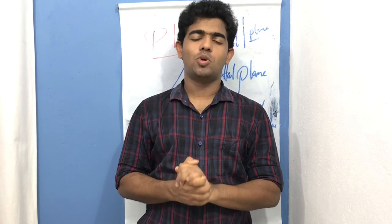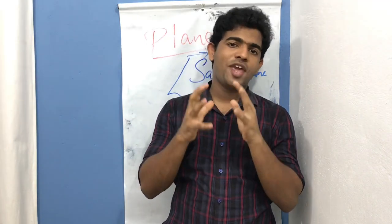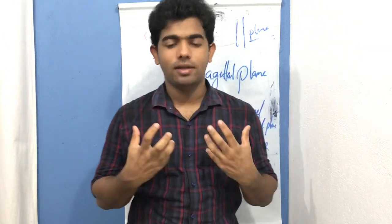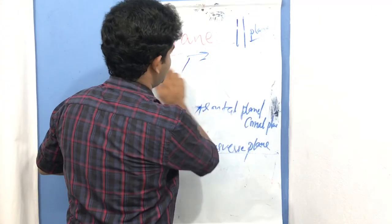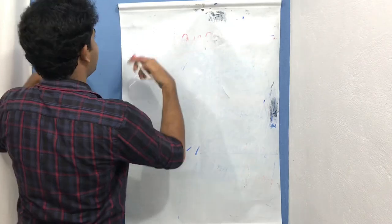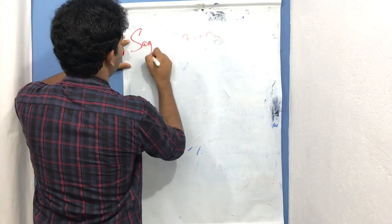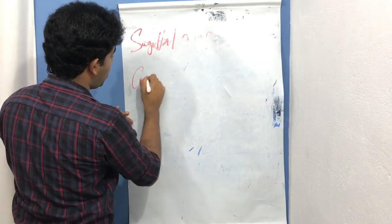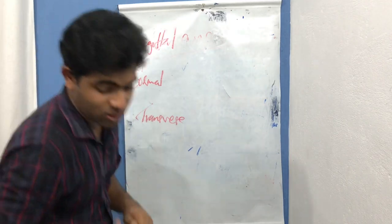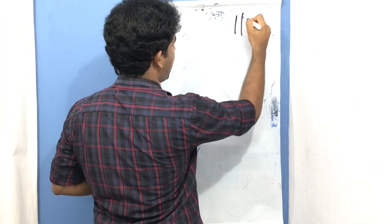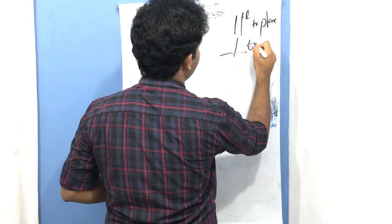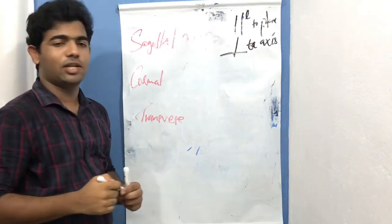Now, every object you use daily has a plane and axis. For example, this pen — you can imagine its sagittal plane, its frontal plane, and its transverse plane. When you get an object, practice identifying which is its sagittal plane, which is its frontal plane. And this leads us to the transverse plane. Remember this basic rule: movements happen parallel to the plane and perpendicular to the axis.